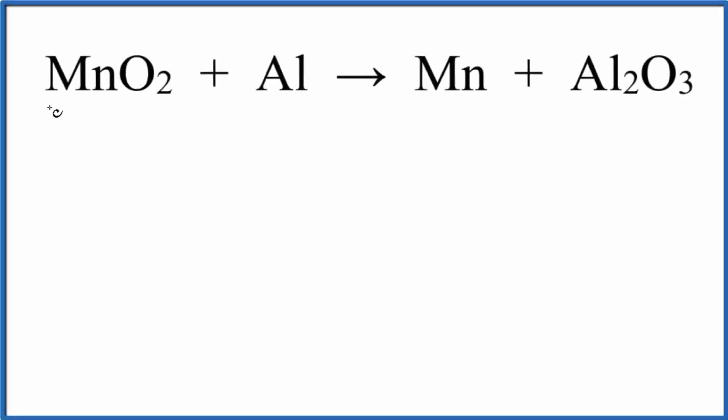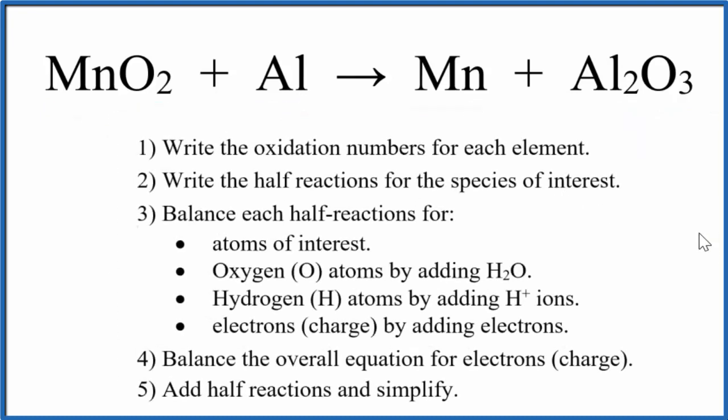Let's balance the redox reaction for MnO2 plus Al gives us Mn and Al2O3. Manganese dioxide plus aluminum, we get manganese and aluminum oxide. We're going to use the ion-electron method, also called the half-reaction method, and these are the steps we'll follow.